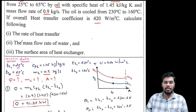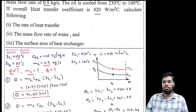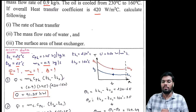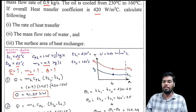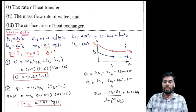Let's find Q first. Since the mass flow rate of cold fluid is unknown, we use the hot fluid side: Q = MH·CPH·(TH1 - TH2). Putting in the values: MH = 0.9 kg/s, CPH = 1.45 kJ/kg·K, TH1 - TH2 = 230 - 160 = 70°C. This gives Q = 91.35 kW. Since CPH is in kJ/kg·K, the answer is in kJ/s, which is kilowatts.